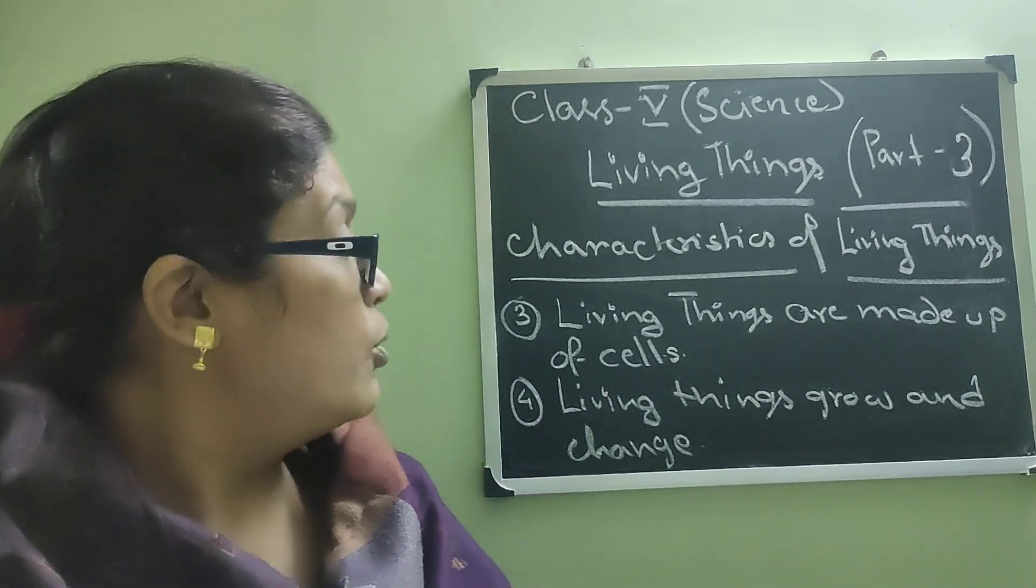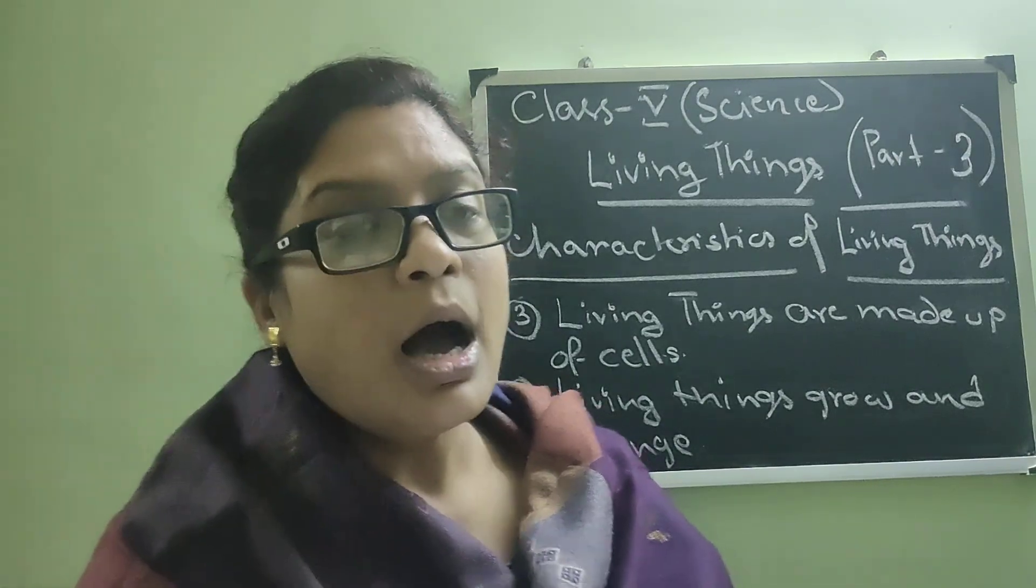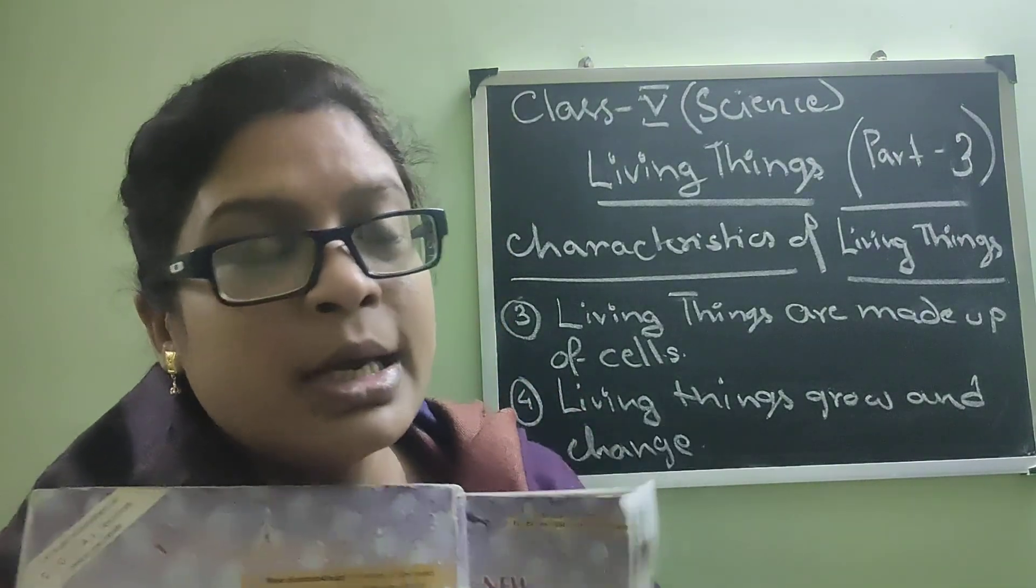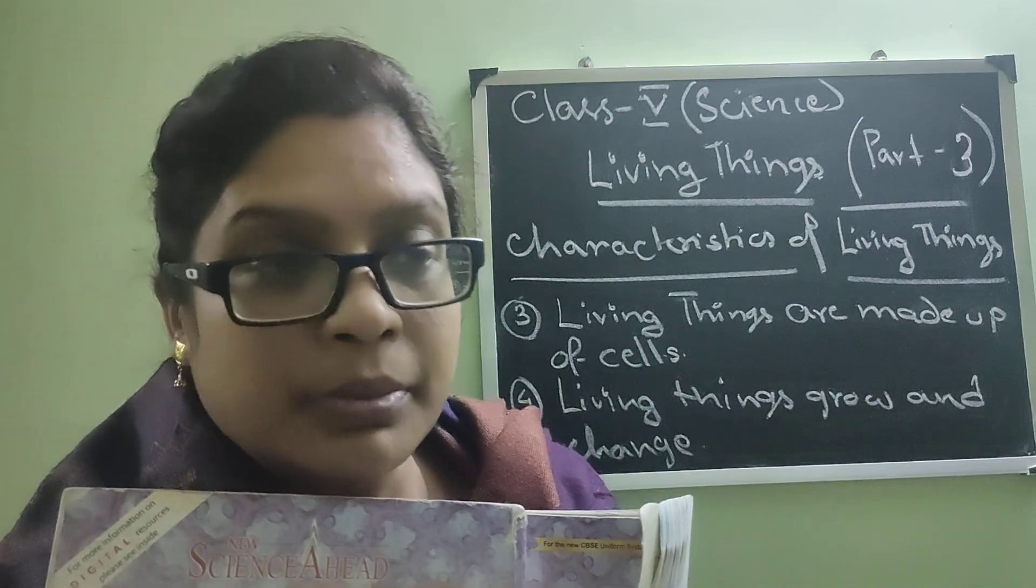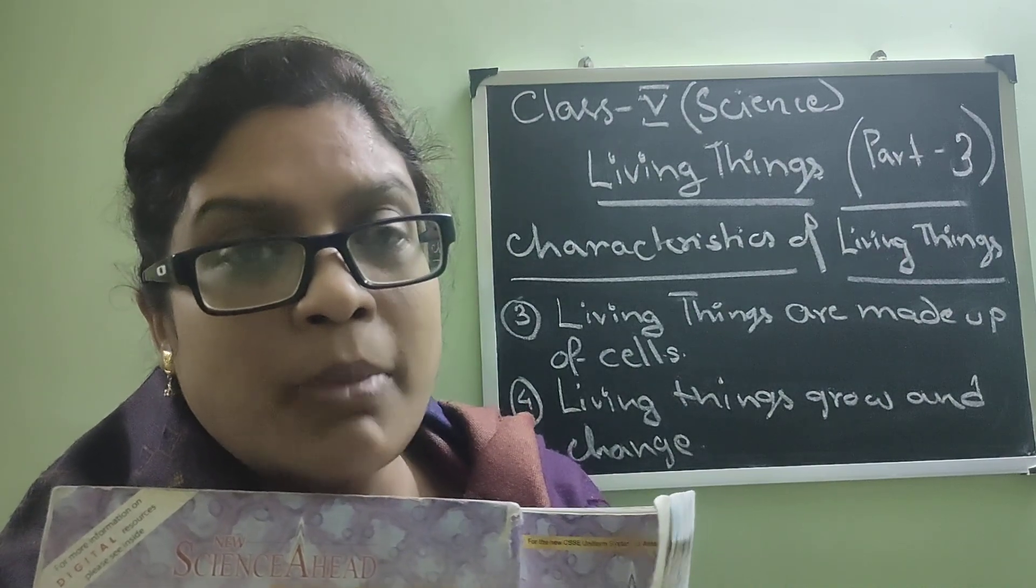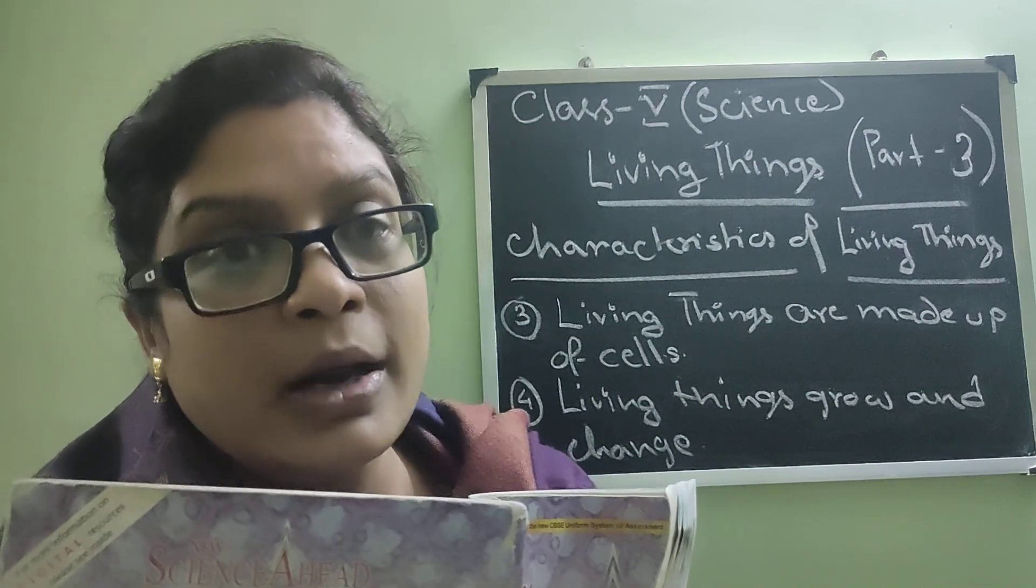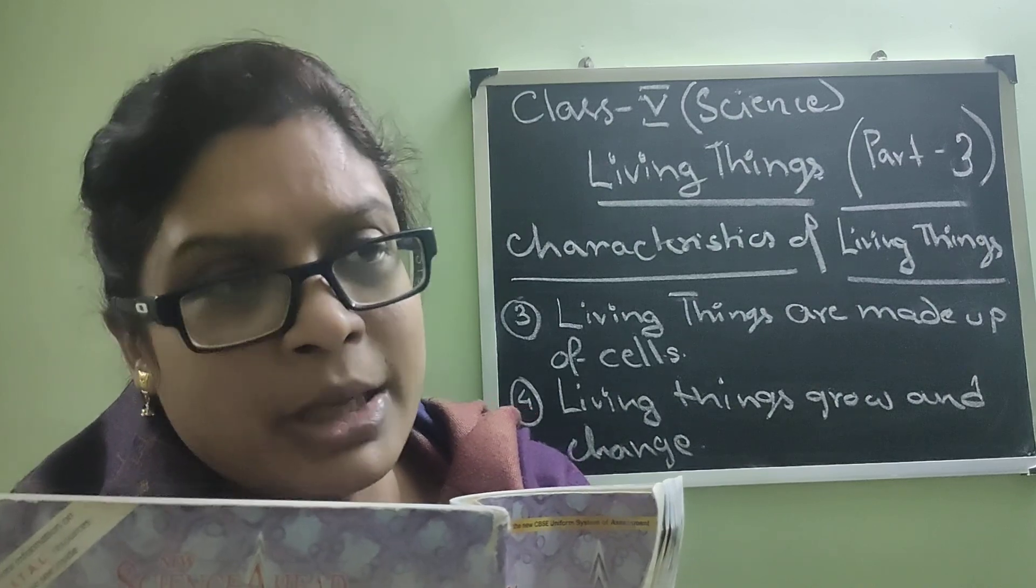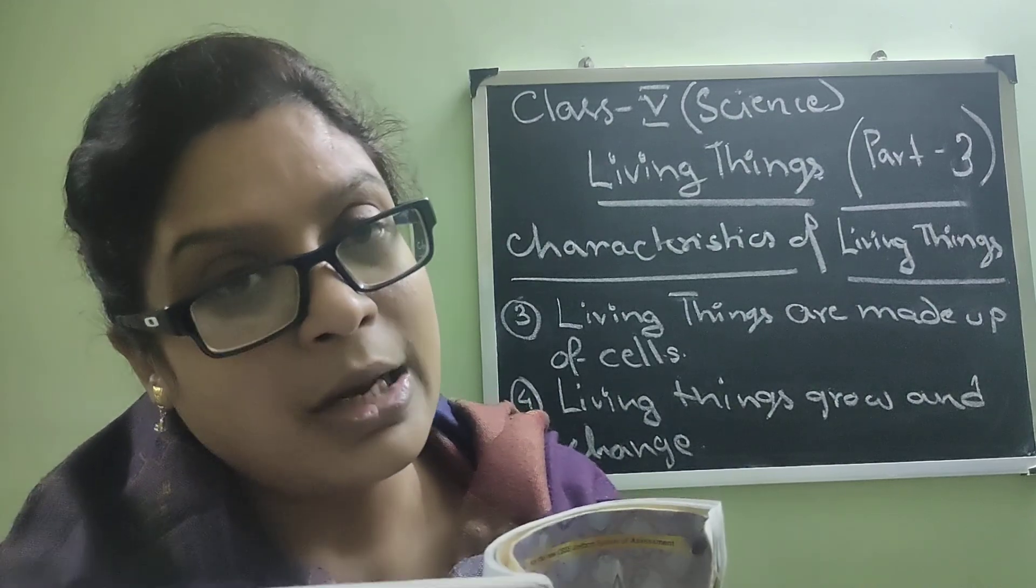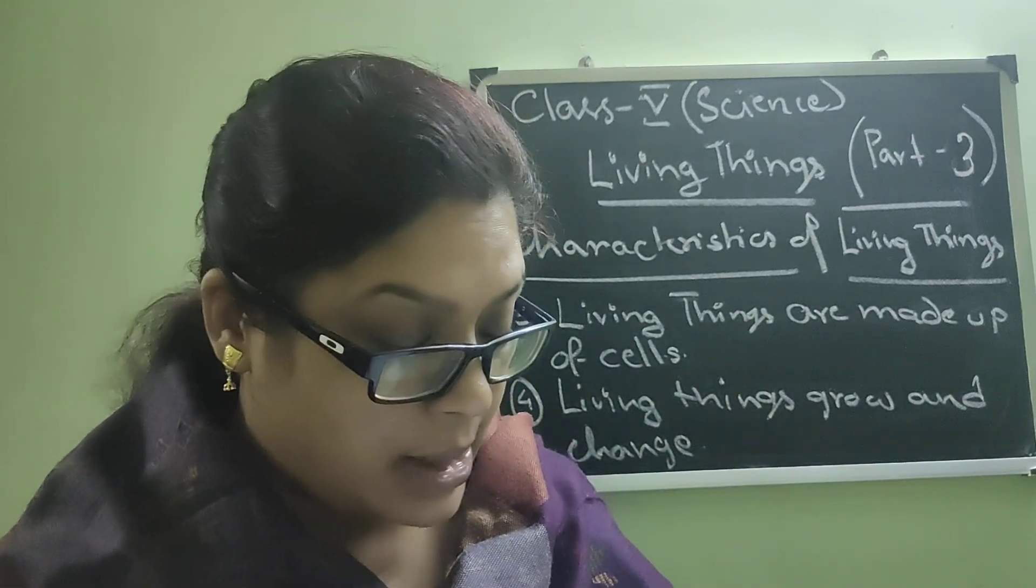Today, we are going to start with the third point: living things are made up of cells. Our body is made up of plenty of cells, and there are animals that are microscopic, very small in size which we cannot see through our eye. There are animals which are made up of one cell also. A cell is the smallest living part of living things.